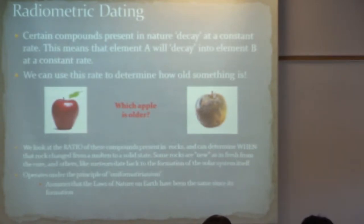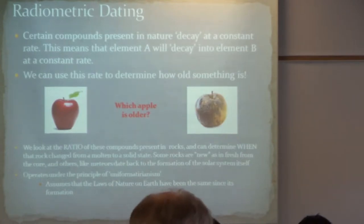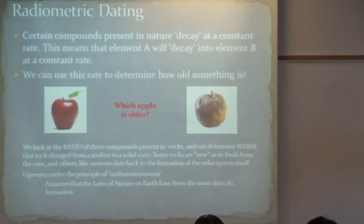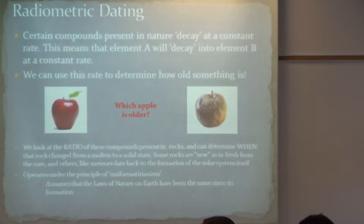So what we do for radiometric dating is we look at the ratio of compounds present in these rocks, element A and element B. What's the ratio of the amount of element A that there is compared to element B? This will give us an estimate of when these rocks turn from a liquid to a solid state. You know, rocks are formed from cooling magma, volcanic lava, things like that originally. So this gives us a date, an estimate, of when these rocks solidified.